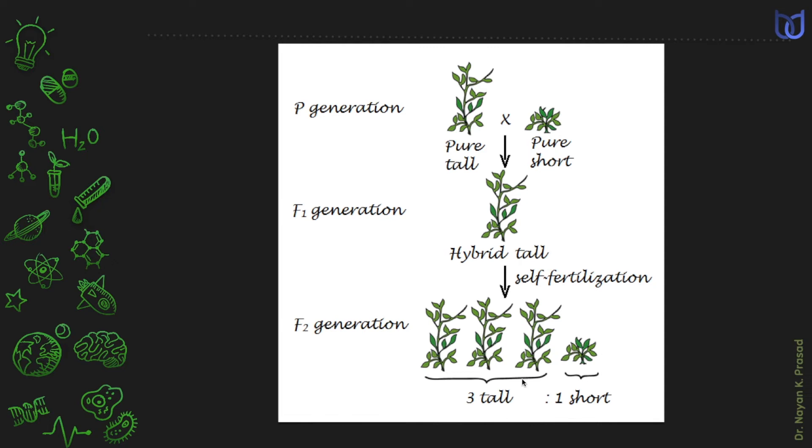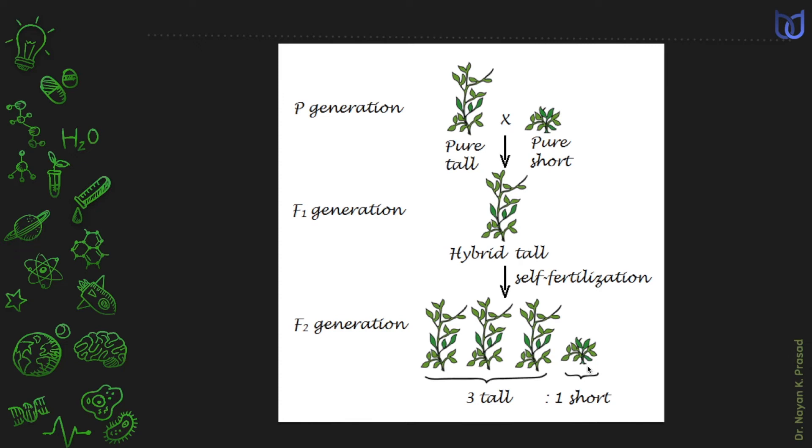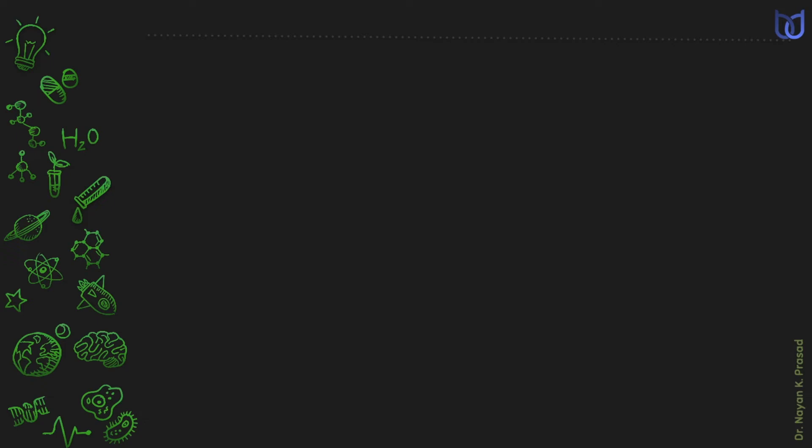That means 75% tall and 25% dwarf. The dwarf character, which was absent in first filial generation, reappeared in the second filial generation. Mendel explained his experiment by assuming that the factors are there which control particular character of the body. For every character, the factors are present in the body.